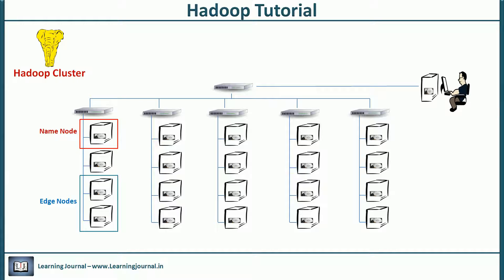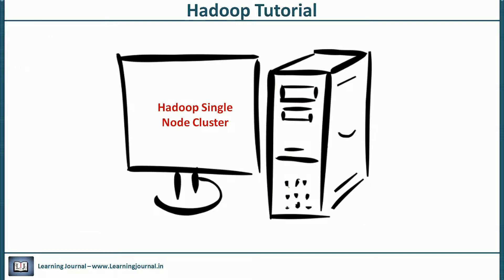It's a very common practice to have a few edge nodes in a large Hadoop cluster. While working on a large Hadoop cluster, you may not have direct access to name node or data node machines. The access is restricted to avoid unnecessary problems on those machines and for other security reasons. We purposefully create edge nodes within the Hadoop cluster and use them for day-to-day client operations. But for learning, we will use a single node cluster.